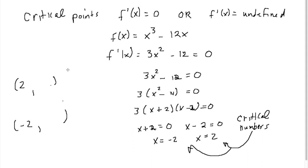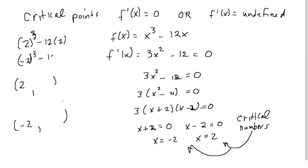Remember, if we plug these values into the derivative, we will find the slope of the function at that point — and we already know the slope is 0 at x equals 2 and negative 2. So we've got to plug these into the original function. We'll do 2 cubed minus 12 times 2, and negative 2 cubed minus 12 times negative 2. These give us our critical points: negative 16 and positive 16.